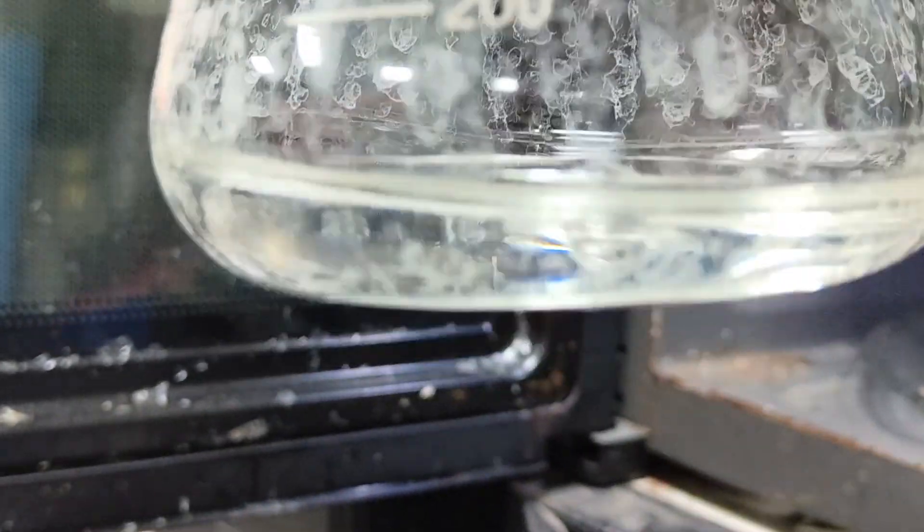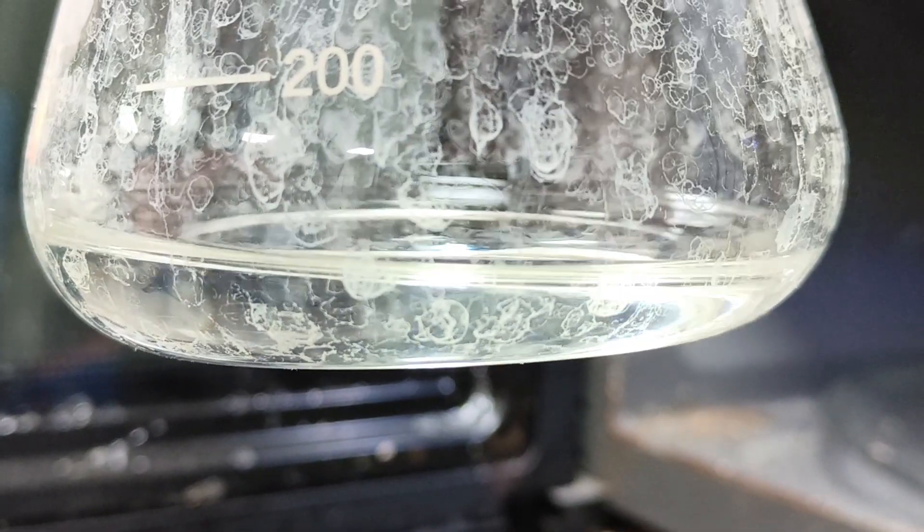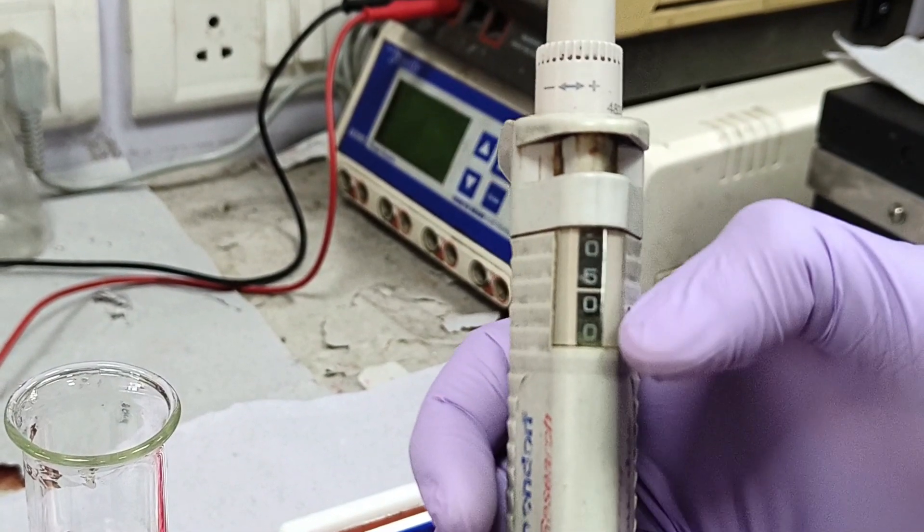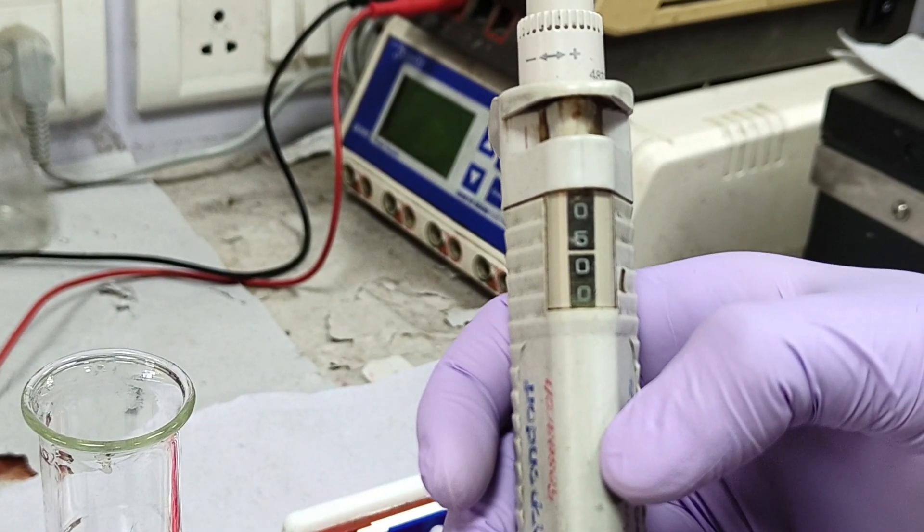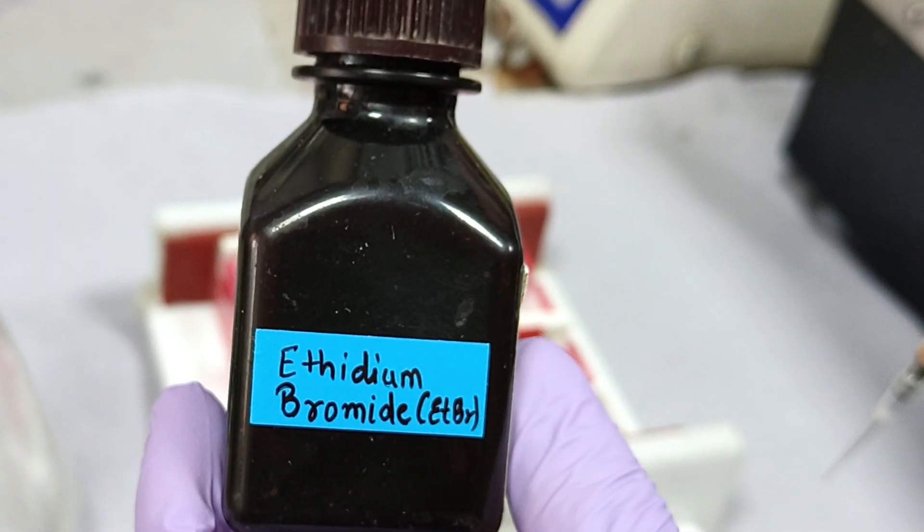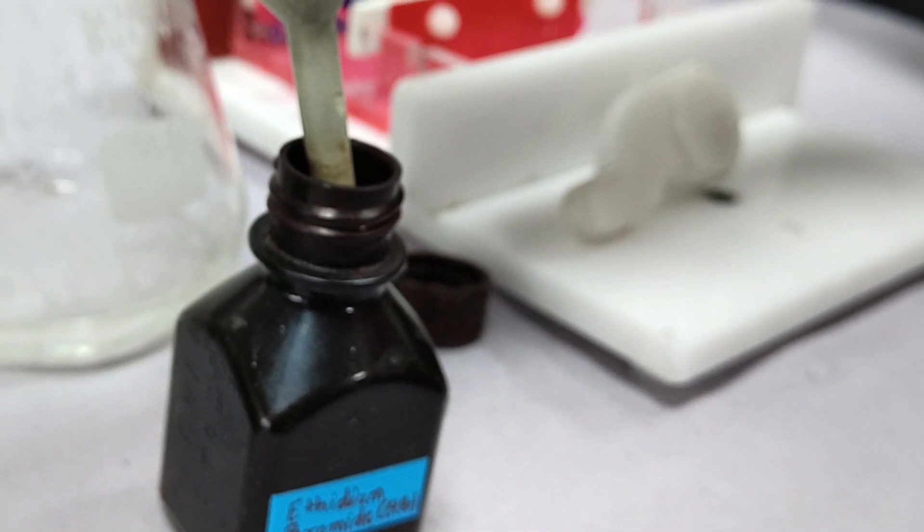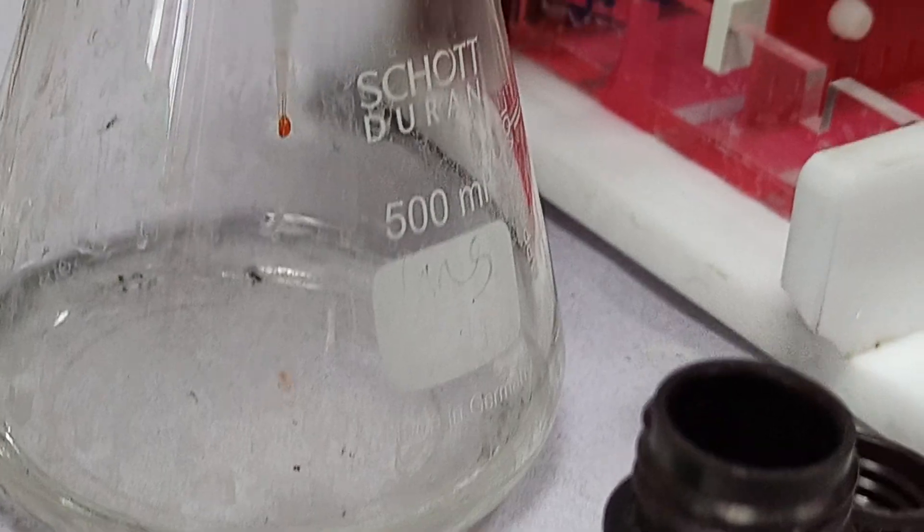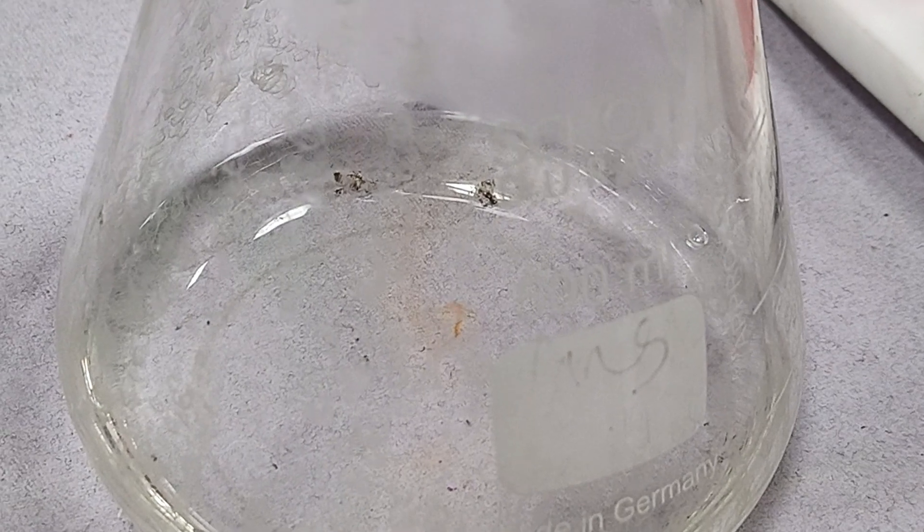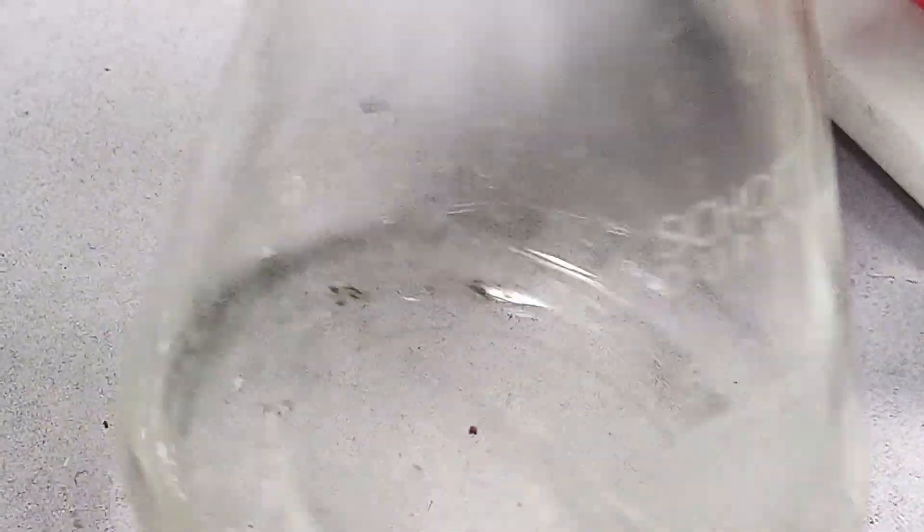Once it is boiled, ensure that the agarose is completely melted and the solution is clear. Cool down the agarose to room temperature and then add 5 microliters of EtBr. Note, it is carcinogenic in nature and should be handled carefully. Be sure not to add the EtBr when the agarose solution is hot as it is temperature sensitive chemical. Gently swirl the flask to mix the EtBr in the gel.